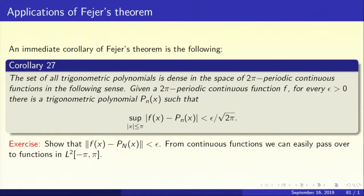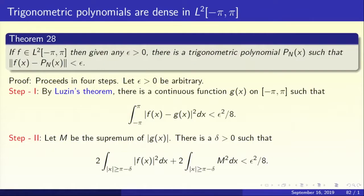So every 2pi periodic continuous function can be approximated by trigonometric polynomials in the supremum norm. Now here is a little exercise: use this corollary to prove that if you take a function in L2, then the L2 norm of f(x) minus P_n(x) will be less than epsilon. This is fleshed out in Theorem 28: trigonometric polynomials are dense in L2 of minus pi to pi. If f is in L2 of minus pi to pi, then given any epsilon greater than 0, there is a trigonometric polynomial P_n(x) such that the L2 norm of f(x) minus P_n(x) is less than epsilon.